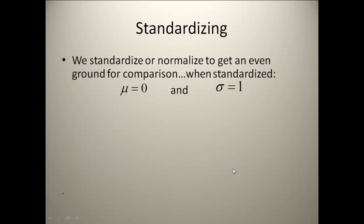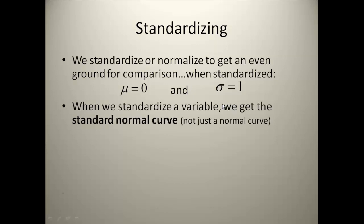When we're working with data sets, we are almost always going to have to standardize them. The reason we standardize is because it gets everything onto the same scale. When we standardize, our mean is always 0 and our standard deviation will always become 1. When we standardize a data set, we get the standard normal curve — not just the normal curve anymore. It's very important to pick up on the word 'standard normal curve,' because as soon as you see that word 'standard,' that tells us the mean is 0 and the standard deviation is equal to 1. Our original data set can have a completely different mean and standard deviation, but after we standardize it, it will be scaled down to have a mean of 0 and a standard deviation of 1.